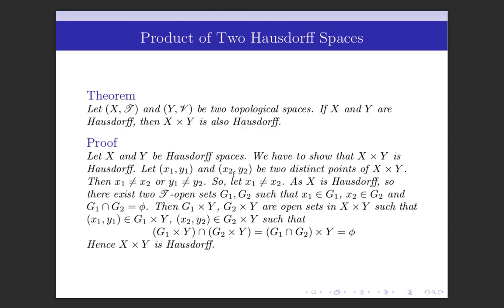Let (x₁, y₁) and (x₂, y₂) be two distinct points of X cross Y. Since these are distinct, we must have x₁ ≠ x₂ or y₁ ≠ y₂; both cannot be simultaneously equal. Let x₁ ≠ x₂. Since X is Hausdorff, there exist two T-open sets G₁, G₂ such that x₁ ∈ G₁, x₂ ∈ G₂ and G₁ ∩ G₂ = ∅. Then G₁ × Y and G₂ × Y are open sets in X cross Y.